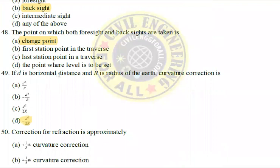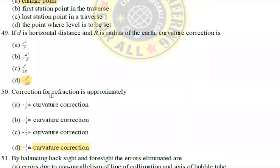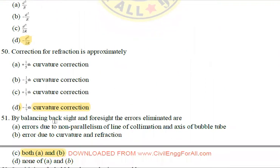Next: If D is horizontal distance and R is radius of the earth, the curvature correction of the earth is D squared by 2R. The refraction correction is approximately 1/7th of the curvature correction.